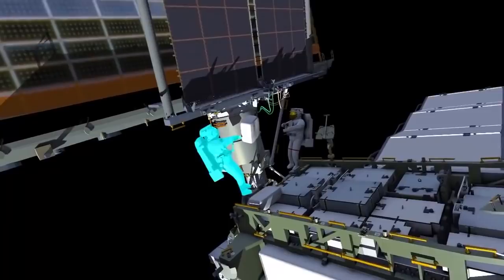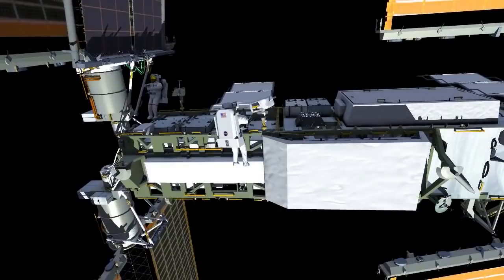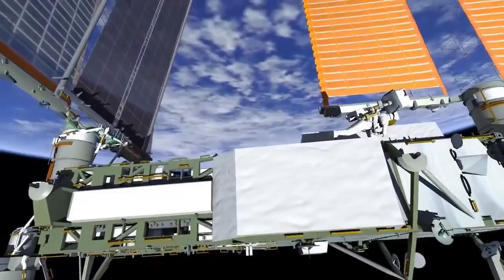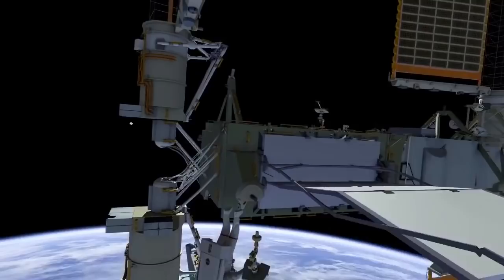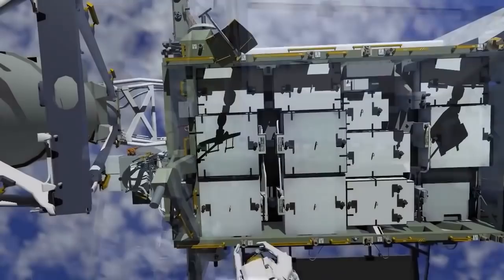Once IROSA has been fully deployed, there are some checkout steps that are performed to make sure that everything is hooked up correctly, and the crew cleans up the work site. They retrieve the handling aids and the pistol grip tools, and they prepare for the second EVA in the series. To do this, they take their foot restraints and move them to the other side of the P6 truss structure. This will be the work site for the second EVA. Each crew member has their own foot restraint, and they'll move them to the other side. The crew repositions the stowage bag that's holding the other set of cables to the other side of the truss and prepositions it for the next EVA.